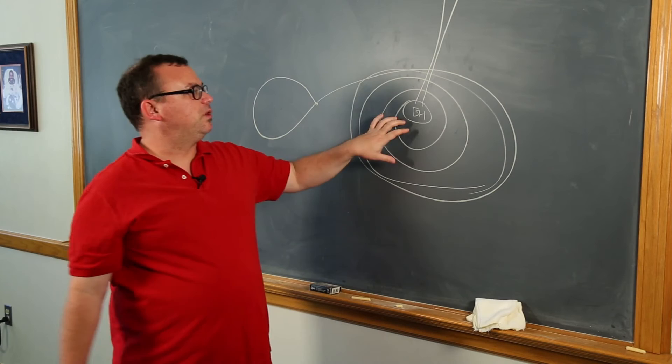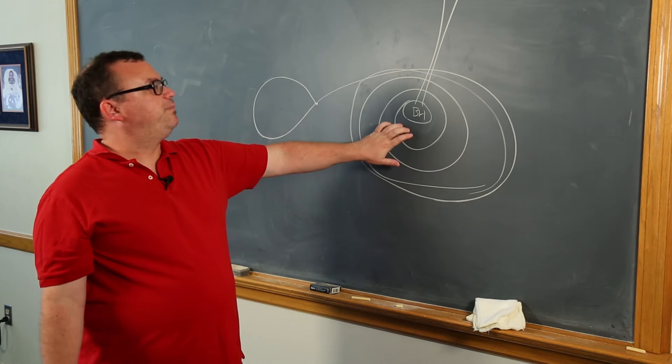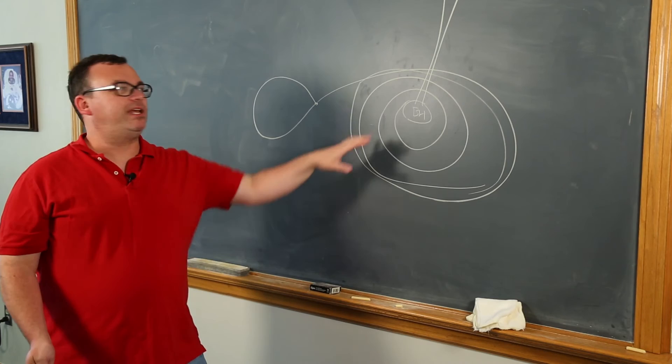And so what that means is that if you're looking for objects that are relatively nearby so that they're easy to detect, but accreting at a very low rate, they tend to be better defined in the radio than in the x-rays. And this is an idea that I put forward about 11 years ago.